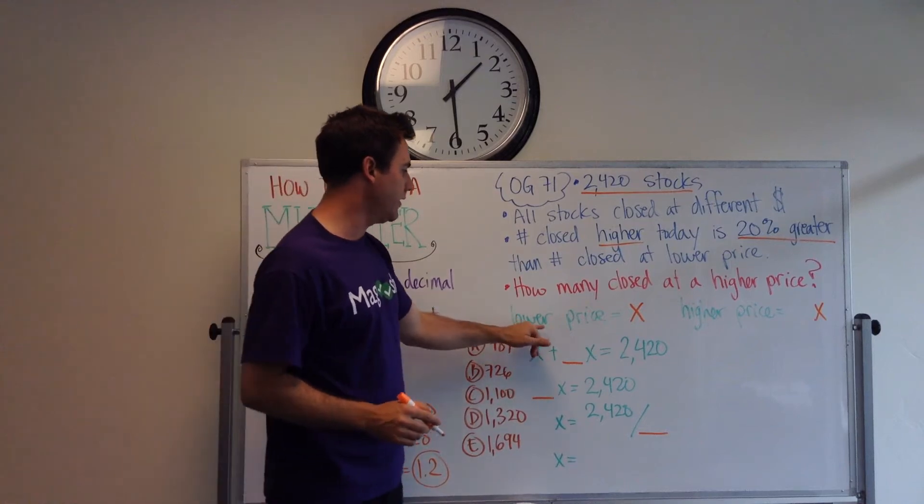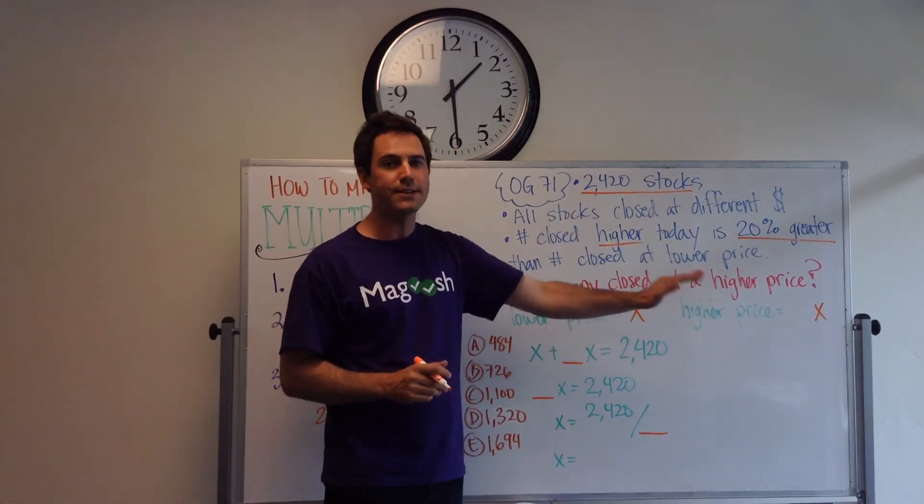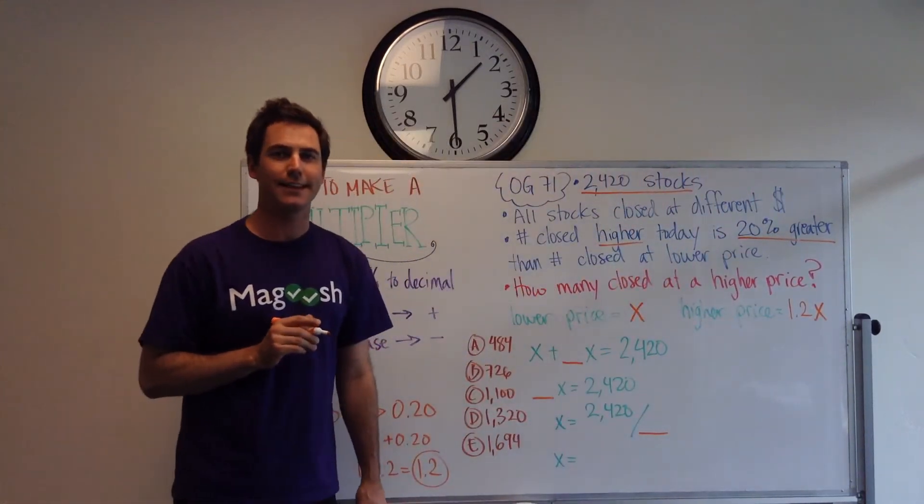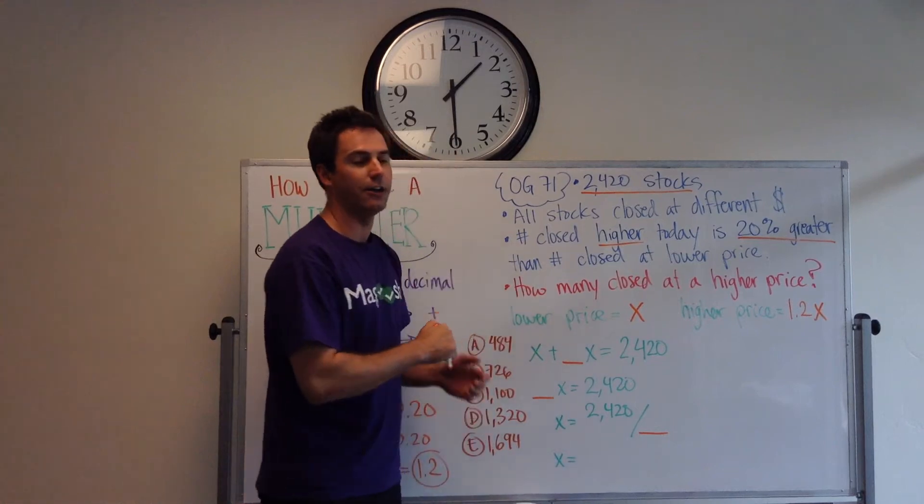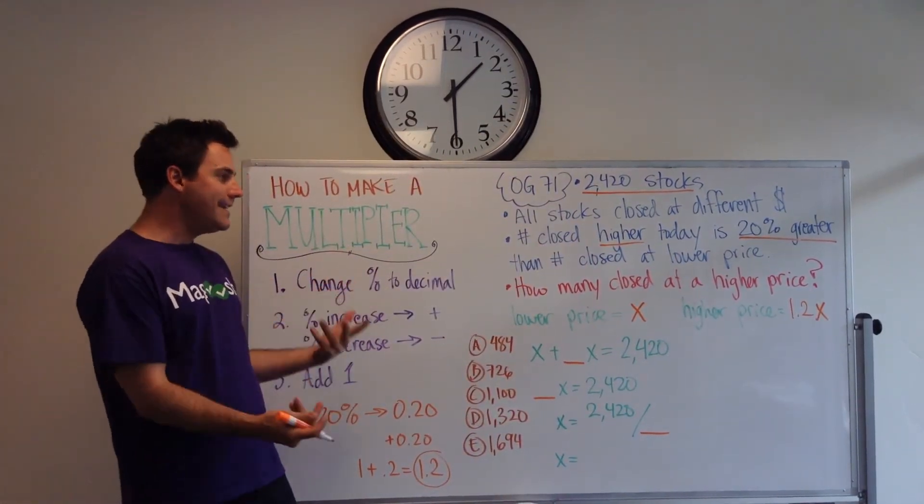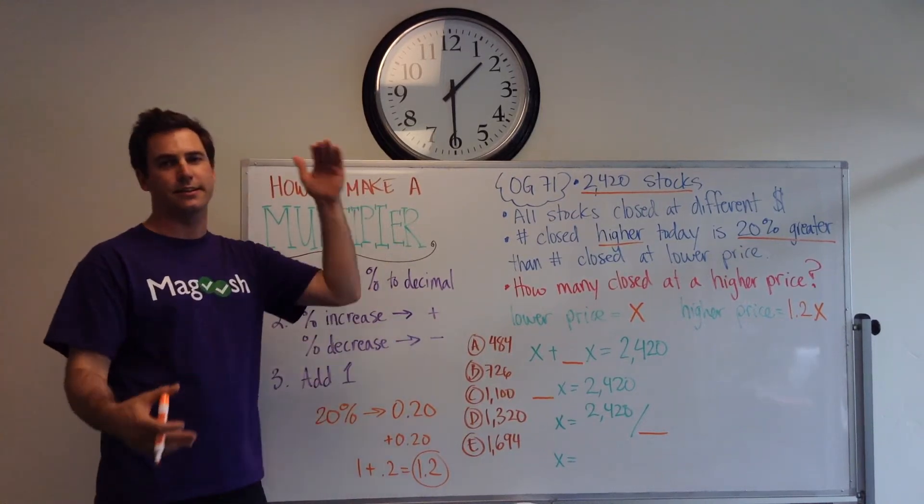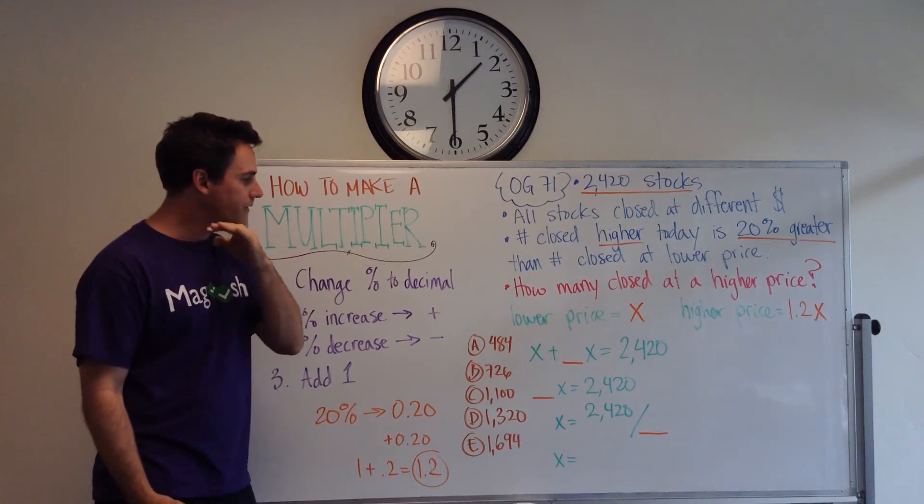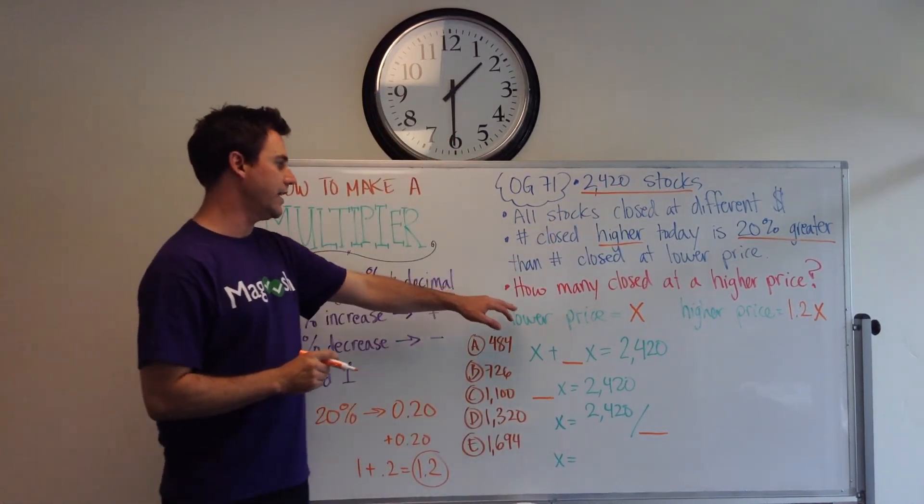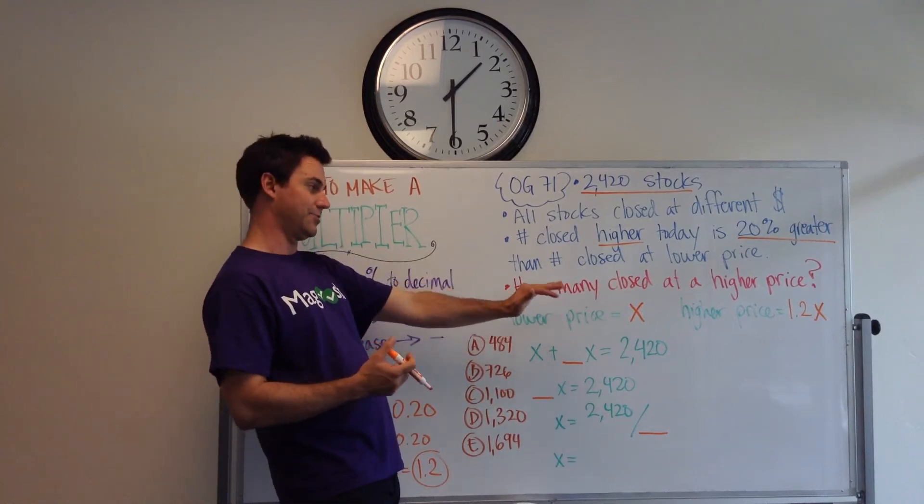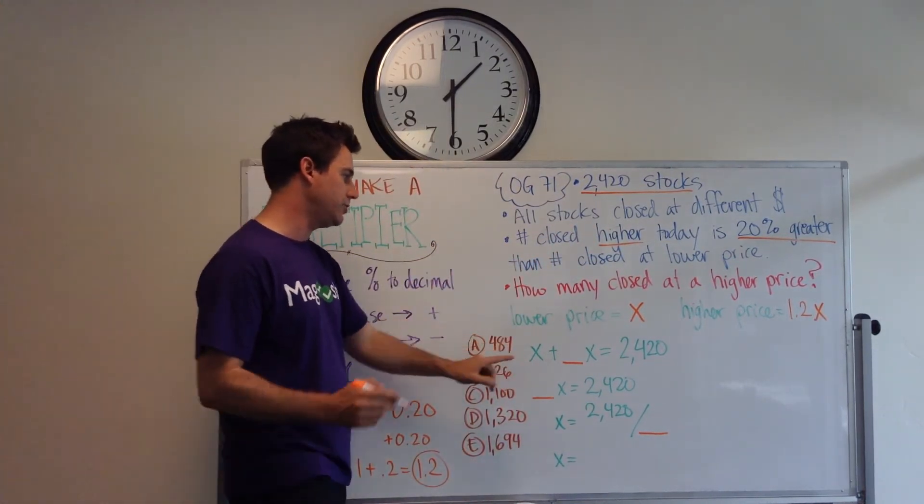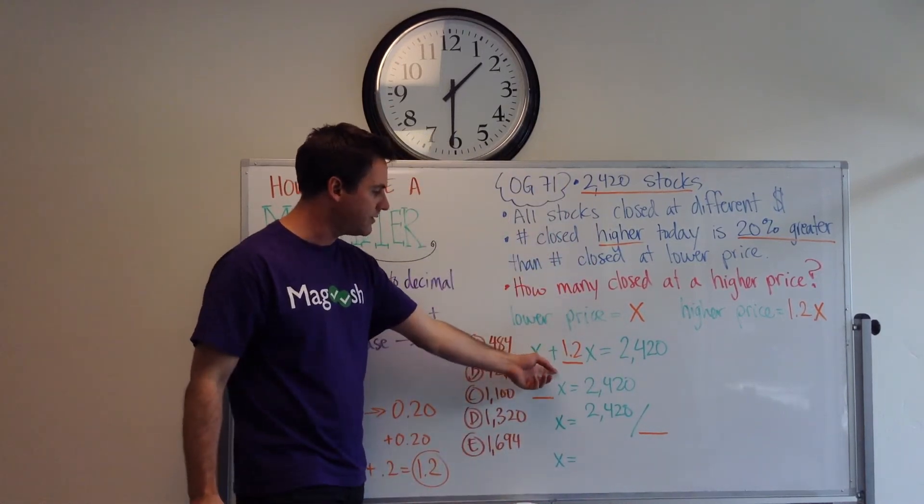So, what we're working with here is the lower price is x. The higher price is 20% more than x. So, all we have to do is put 1.2 in front of our x and that's our multiplier. Because x is 100% of the lower price and we know the higher price is 20% more than that. So, the multiplier is representing that for us. It makes it a lot easier to solve this problem instead of having to deal with percents and putting a number over 100 and then you have fractions. We know the total amount of stocks is 2,420. So, we take the lower price stocks and we take the stocks that close at a higher price, we add them together, we know they're going to total 2,420.